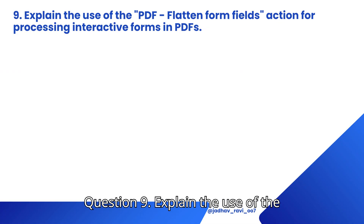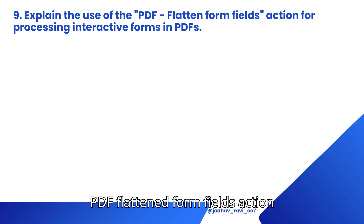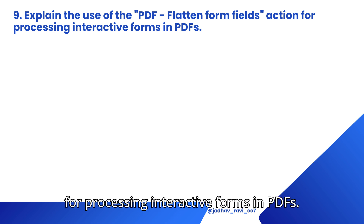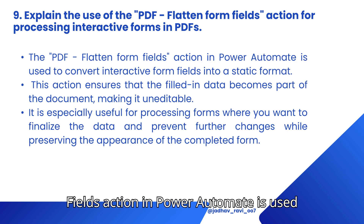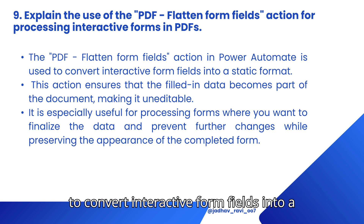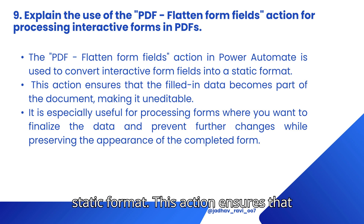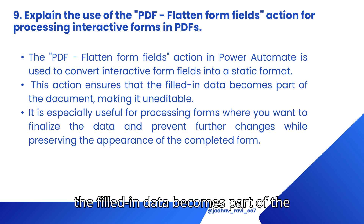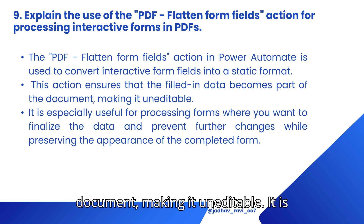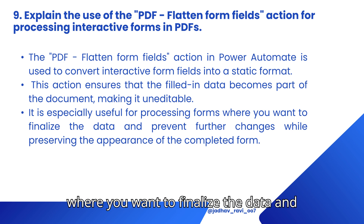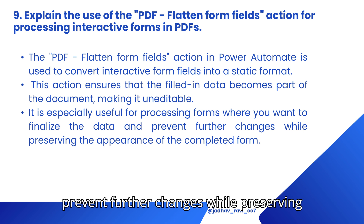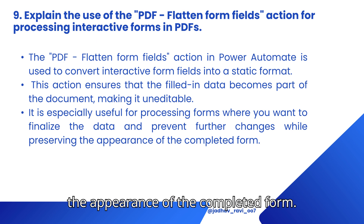Question 9: Explain the use of the PDF Flatten Form Fields action for processing interactive forms in PDFs. The PDF Flatten Form Fields action in Power Automate is used to convert interactive form fields into a static format. This action ensures that the filled-in data becomes part of the document, making it uneditable. It is especially useful for processing forms where you want to finalize the data and prevent further changes while preserving the appearance of the completed form.